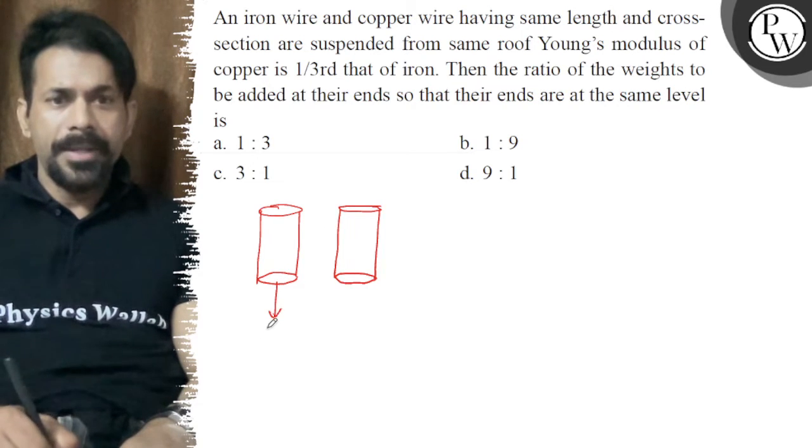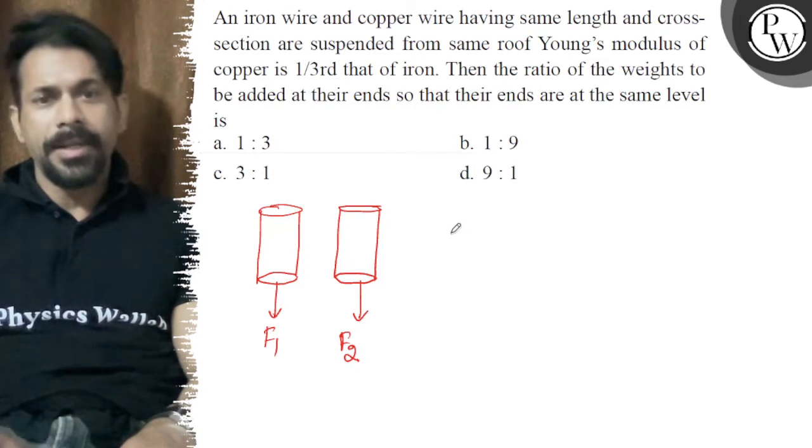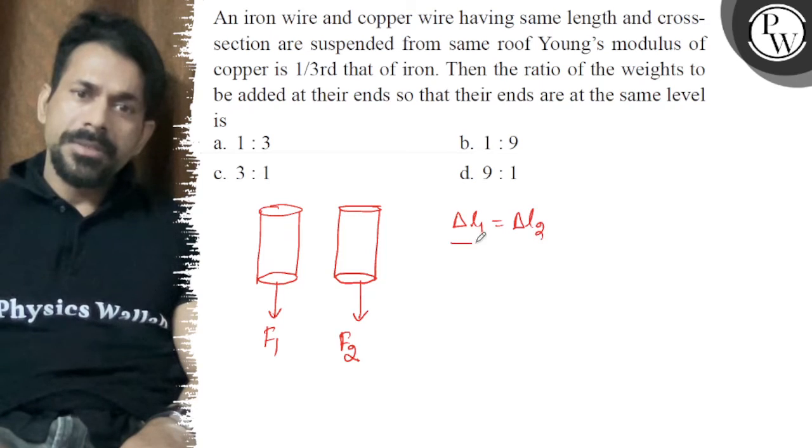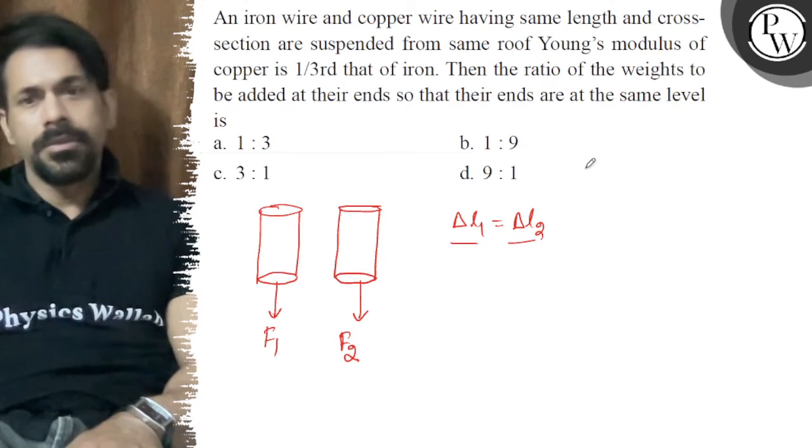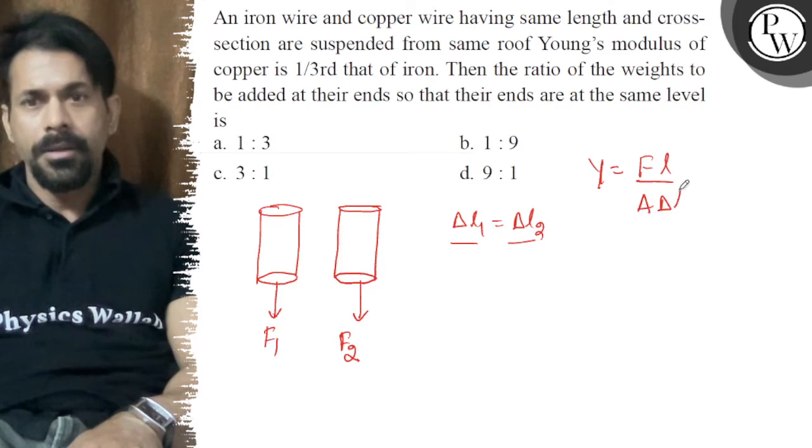We apply F1 here and F2 here. So what we want is del L1 equal to del L2, that's why they will have the same level. Y is nothing but F into L upon A into del L, right?